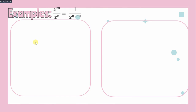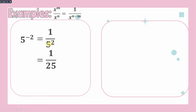Another example: we have 5 raised to negative 2. To get rid of the negative exponent, we get the reciprocal of the base, giving us 1 over 5 raised to 2, or 5 squared. To simplify, we get the square of 5, which is 25. So the final answer is 1 over 25.